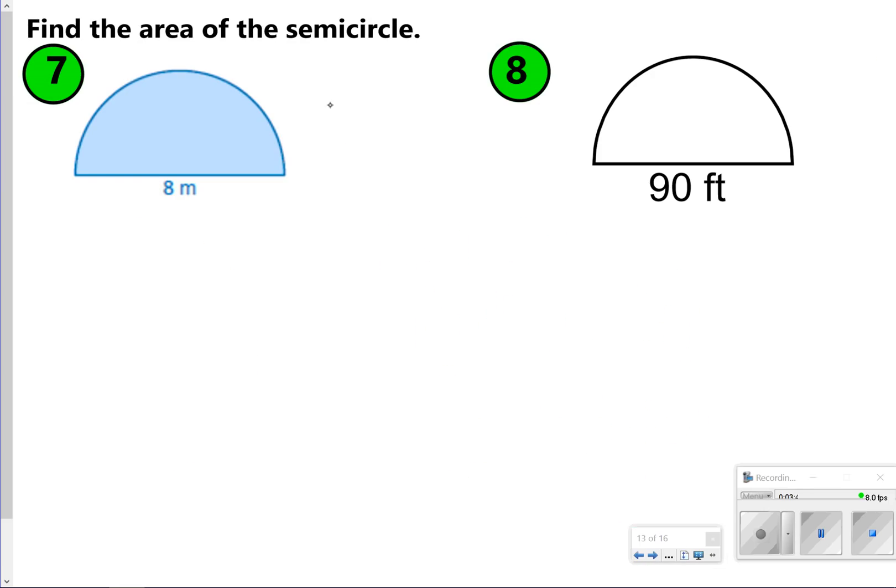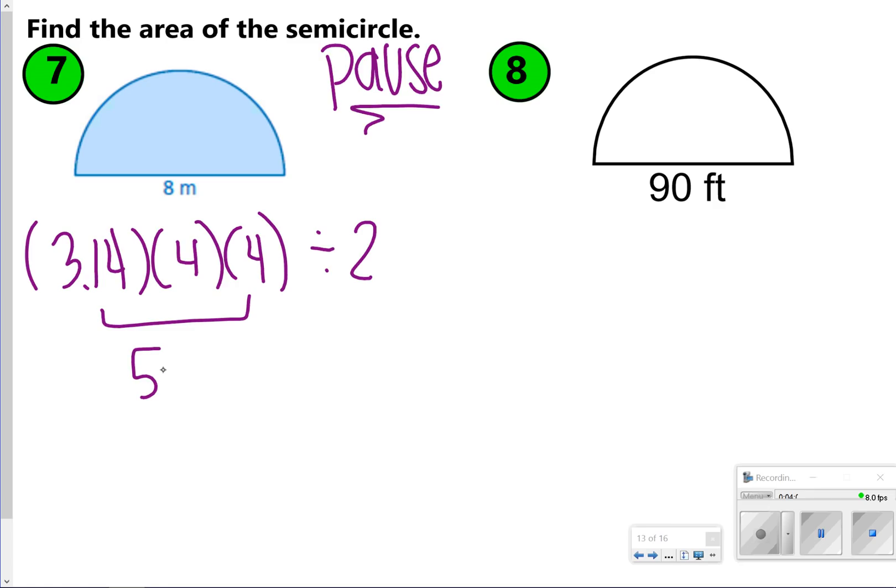Here are two more that you're going to try. Let's go ahead and pause the video now. Once you're done trying both 7 and 8, go ahead and click play to check your work. For number 7, you should have 3.14 times 4 times 4, and then divide it by 2. When you do 3.14 times 4 times 4, you get 50.24, and then when you cut that in half, you get 25.12 meters squared.